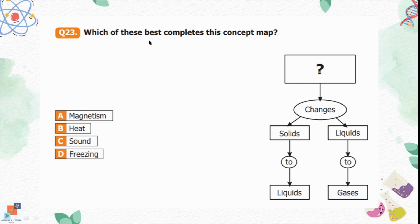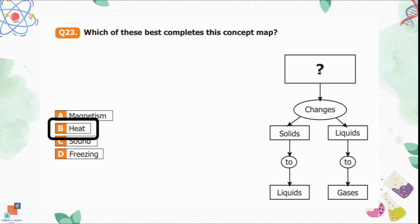Question 23: Which of these best completes this concept map? Dash changes solids into liquids and changes liquids into gases. The options are magnetism, heat, sound, and freezing. Option B, heat, is the correct option. Heat changes solids into liquids — for example, ice into water — and changes liquids into gases, such as water into steam.